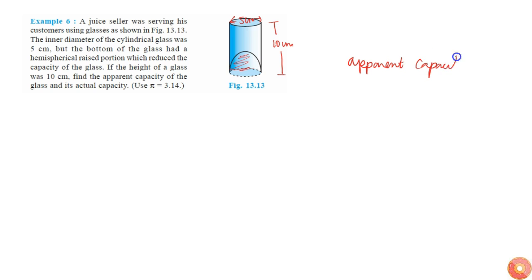The apparent capacity is just the volume of cylinder which we can see with 10 centimeters height and 5 centimeters diameter. That will be simply πr²h, which is π equals 22/7 or 3.14.